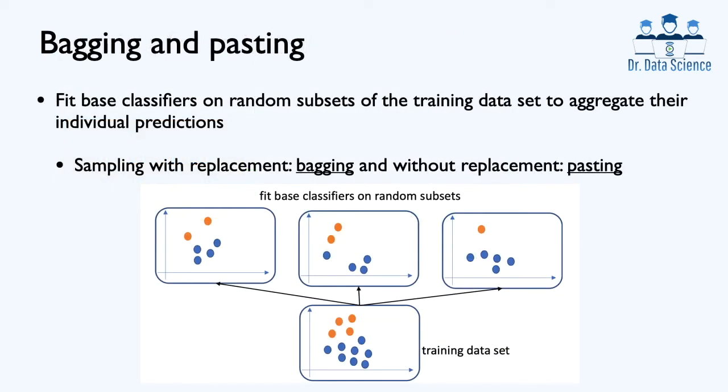The main idea behind ensemble learning is to fit base classifiers on random subsets of the training data to aggregate their individual predictions. As we can see in this illustration, we have the training data set and then we randomly sample a few data points. In this example, we have three different subsets of the original data.